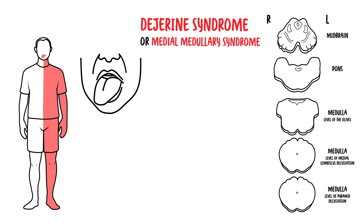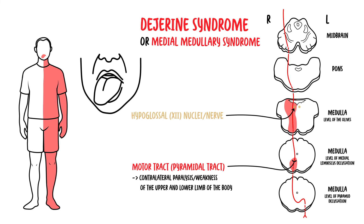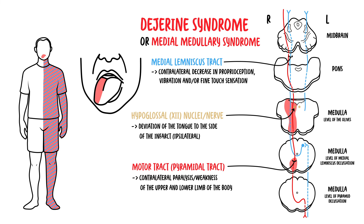With an infarct in the right medial medulla, the following structures are involved: involvement of the right motor pyramidal tract results in contralateral paralysis and weakness of the upper and lower limbs — on the left side. Involvement of the hypoglossal nerve fibers on the right results in tongue deviation toward the affected side — to the right. Involvement of the right medial lemniscal tract results in contralateral decrease in vibration and fine touch sensation.